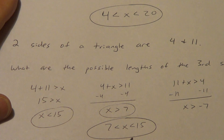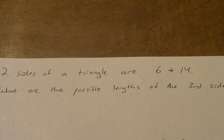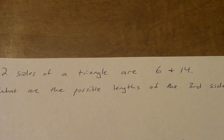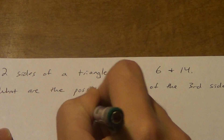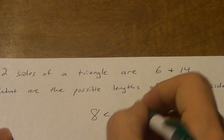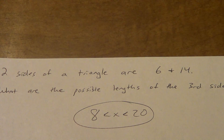Two sides of a triangle are 6 and 14 — what are the possible lengths of the third side? Instead of writing all the algebra, use the shortcut. We subtract: 14 minus 6 gives us 8. We fill in the middle, then add: 6 plus 14 gives us 20. So the answer is 8 is less than X is less than 20. These are the types of questions you love to see on a quiz: subtract, fill in the middle, and add.